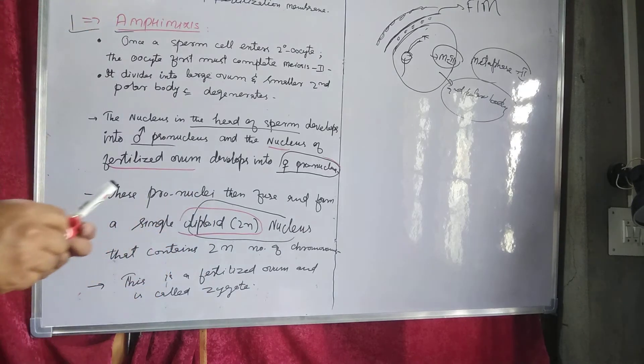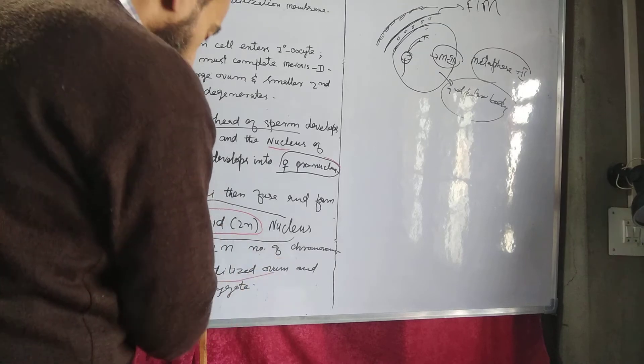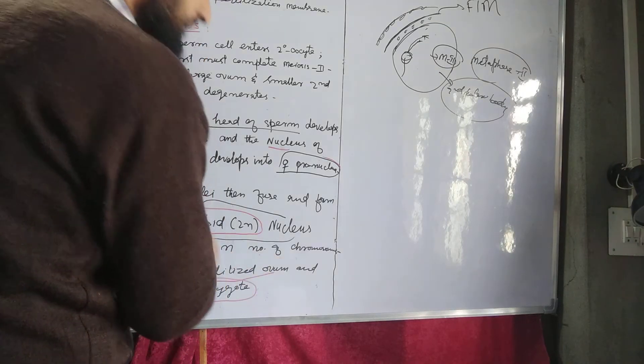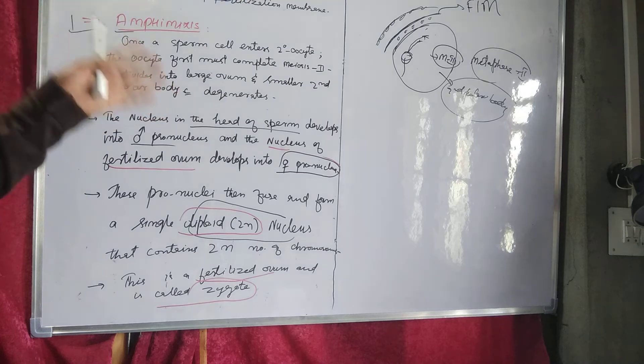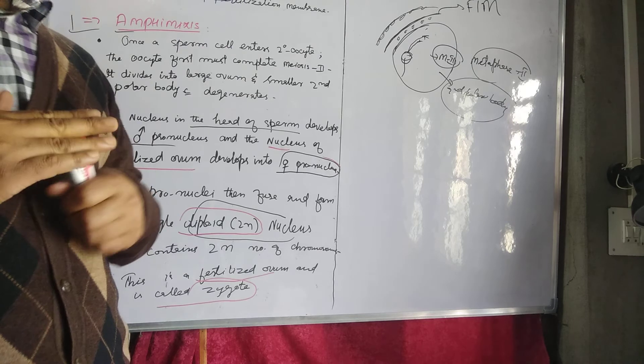They form a single diploid nucleus. This is called fertilized ovum, and the fertilized ovum's name is zygote.